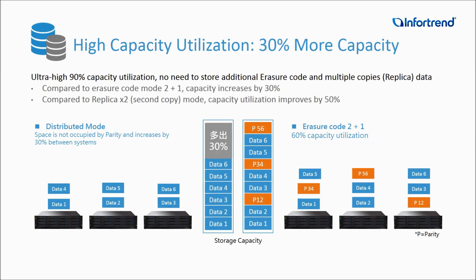The first is high capacity utilization. In Distributed Mode, the system does not need to store Erasure Code parity or replica copies of data, so the overall space can be increased by 30%. For example, in Erasure Code 2 plus 1 mode, each file needs an additional 50% space to store parity, so one-third of the space will be occupied by parity. In Distributed Mode, there will be 30% more disk space.